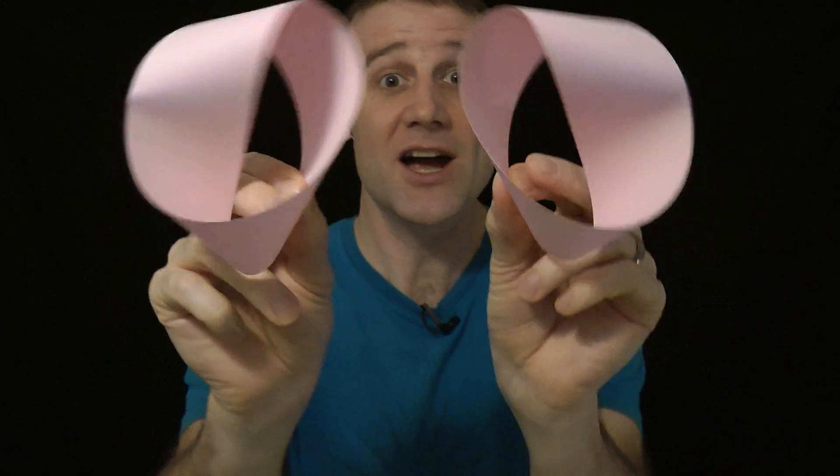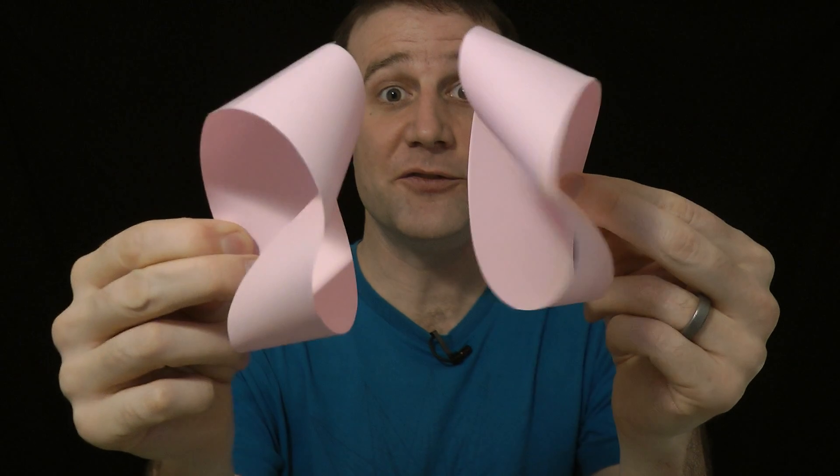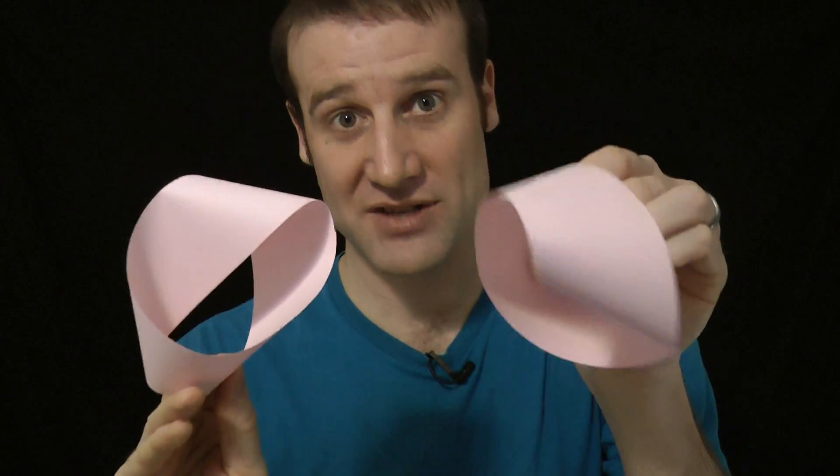We say they have different chirality, they twist in different directions, and for the two hearts to work, you need to have a right-handed with a left-handed.